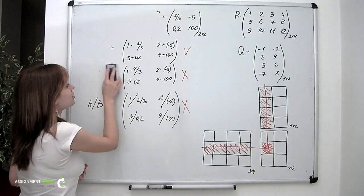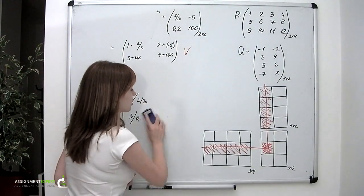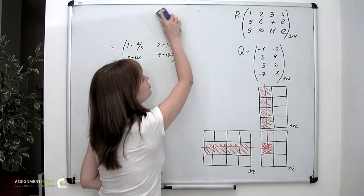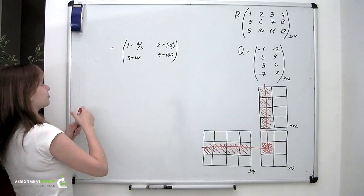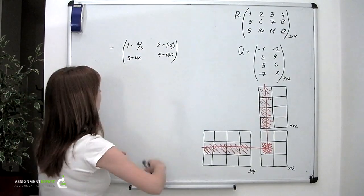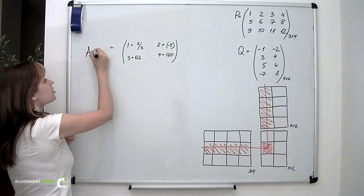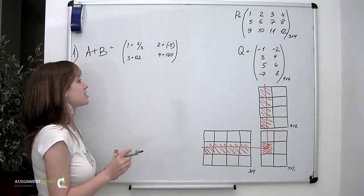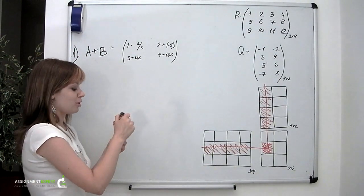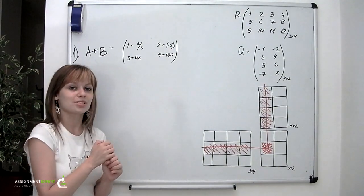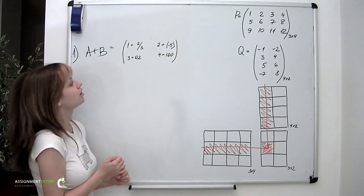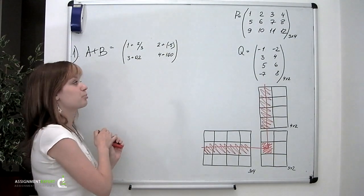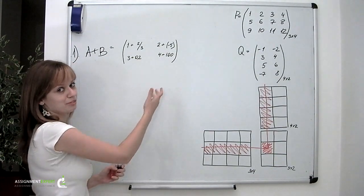As it turned out, matrices were very useful for solving systems of linear equations, and certain operations became natural to use. The first is addition, which goes exactly as described above: if you have two matrices of the same size, you simply take the corresponding entries and sum them up.